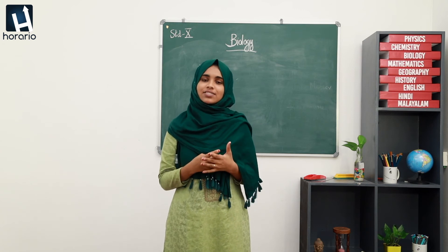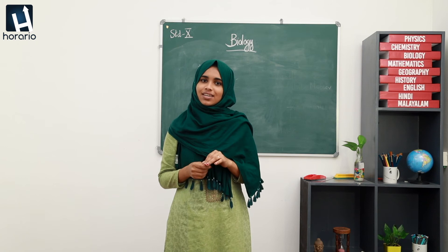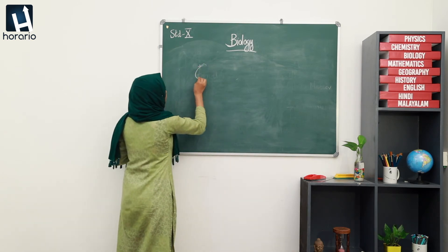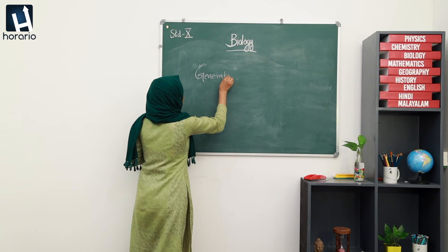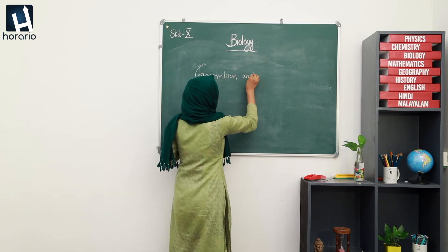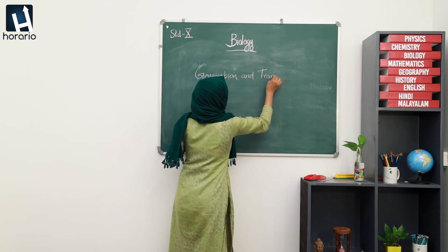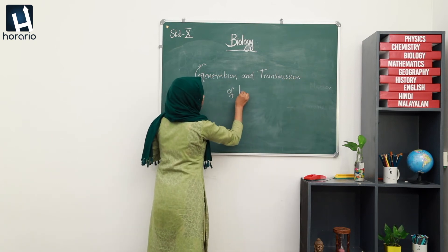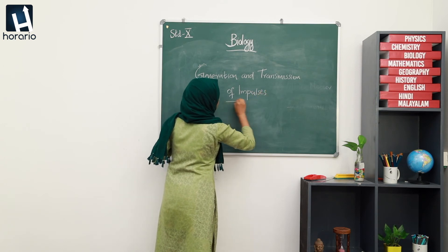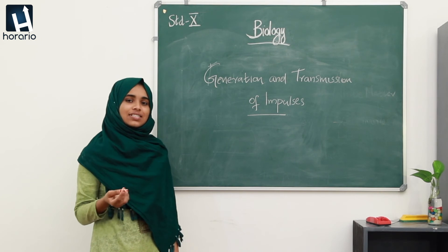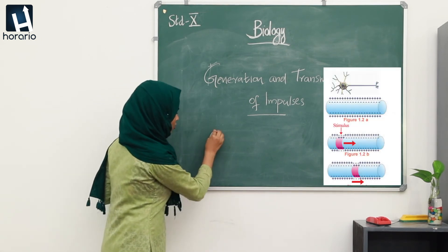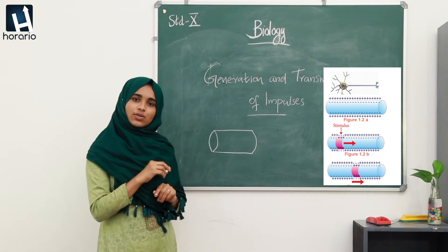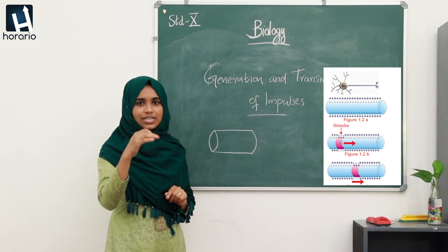We studied that the nervous system will control and manage all activities. Now we are going to study the generation and transmission of impulses. For this we can consider the representation of an axon, so you may please draw this representation. This is a part of an axon, which is a part of a neuron, and it also has a cell membrane.